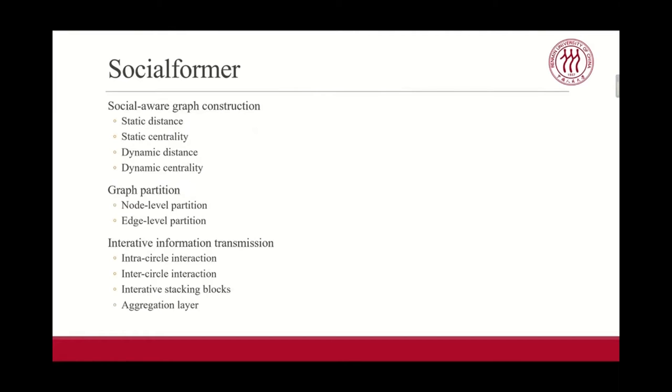Specifically, social former is composed of four steps. First, based on the characteristics of social networks, we design four sparse attention patterns to construct a graph with probability sampling. Second, we present two friend-circle-based strategies of graph partition to reduce the memory and computational complexity. Third, we devise the two-stage information transmission model to capture the interactions between terms with the augmented transformer structure. And finally, by aggregating the representations of passages and subgraphs, a comprehensive document representation is formed for document ranking.